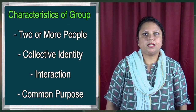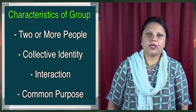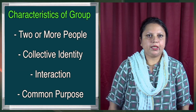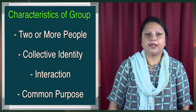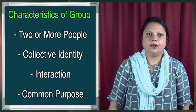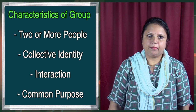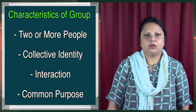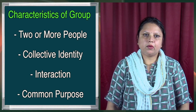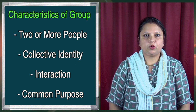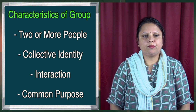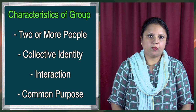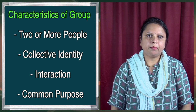Let us discuss about the characteristics of a group. When we talk about a group, there should be at least two or more people. Then they should have collective identity. There should be interaction among them, and the group should be formed for some common purpose. So to become a group, you need to have two or more people, a common identity, and a common purpose.